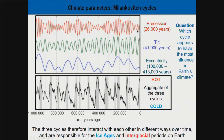The eccentricity cycle has the largest wavelength, and most of the interglacials — the warmer periods — appear to be associated with positive expressions of eccentricity. The effect can be amplified by precession and tilt, but eccentricity is the cycle that has the most influence on Earth's climate. Let's look at eccentricity in more detail.